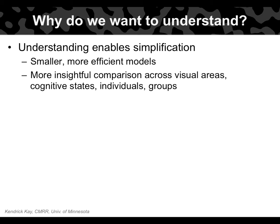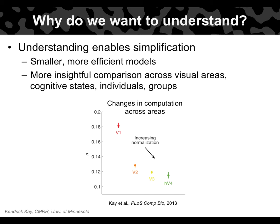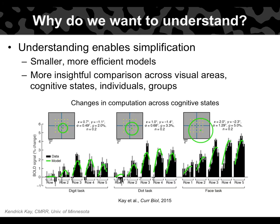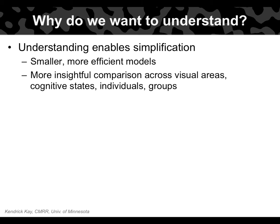Here's an example. In one paper we identified a single model parameter corresponding to a single computation. Fitting this parameter to responses in different visual areas revealed changes in that parameter, giving clear insight into exactly what computation is changing across areas. In another paper, we collected three datasets from subjects performing different cognitive tasks, developed a simple model fit to each task separately, and could clearly see what computations change with this simple manipulation. The point is: if you have a complex model with millions of free parameters, it becomes very difficult to identify what is changing across visual areas or cognitive states.